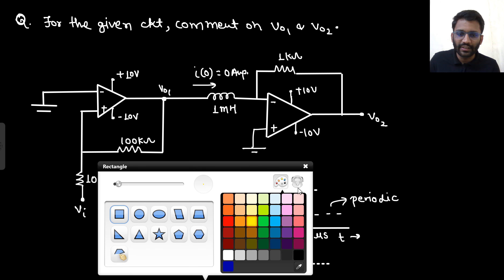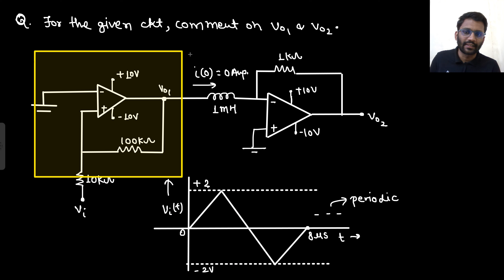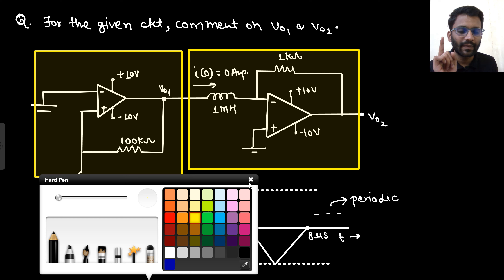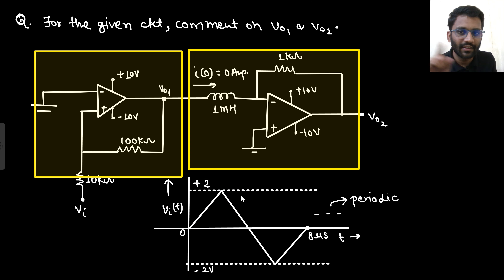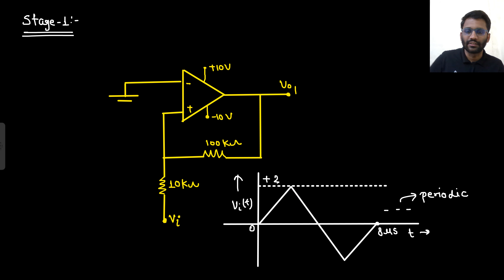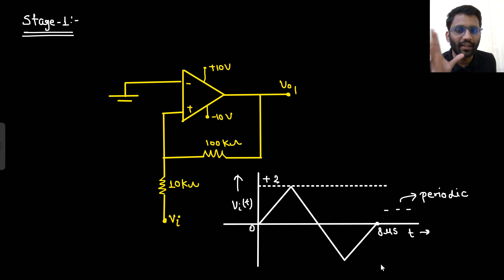You can see two stages here. The first stage is the non-inverting Schmitt trigger. So let's solve the first stage, then we will talk about the second stage. I hope most of you know how to solve the Schmitt trigger - even if you don't, we will deal with it here.